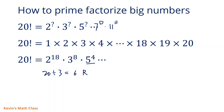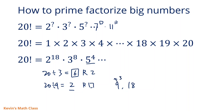Now for the power of 3: 20 divided by 3 is 6 remainder 2, so there are six multiples of 3. Then 20 divided by 9 gives 2, meaning there are two multiples of 9 (which are 9 and 18), each contributing an extra factor of 3. There are no multiples of 27, so in total it's 6 plus 2 equals 8 — giving us 3 to the power of 8.